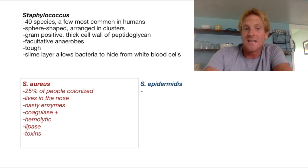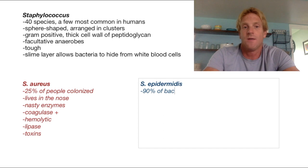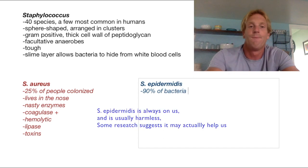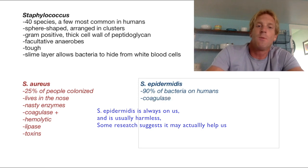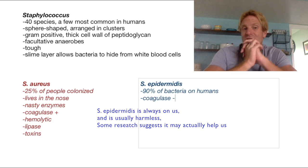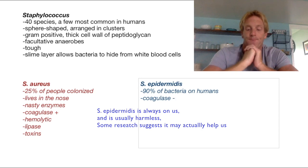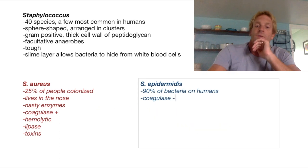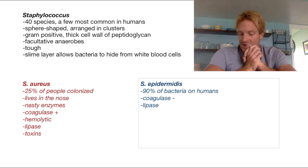In contrast, Staph epidermidis is not nearly as harmful. In fact, 90% of the bacteria on every human is Staph epidermidis — it's part of our normal bacterial flora. It lacks coagulase, so it is coagulase negative and unable to induce blood clots. It also lacks these harmful enzymes and toxins, so it's not nearly as harmful — just a naturally occurring bacteria that lives on our bodies. However, it does contain lipase, and it uses that to eat the sebum on our body tissue.